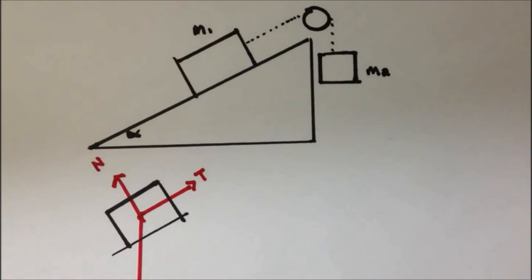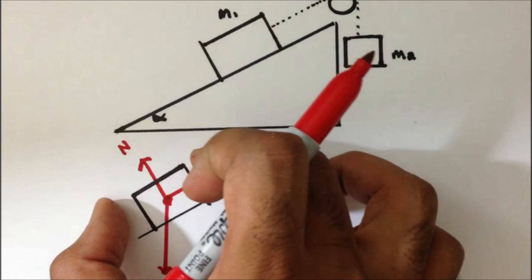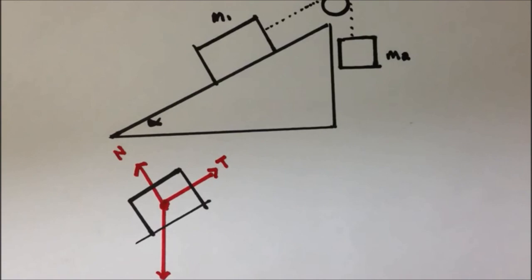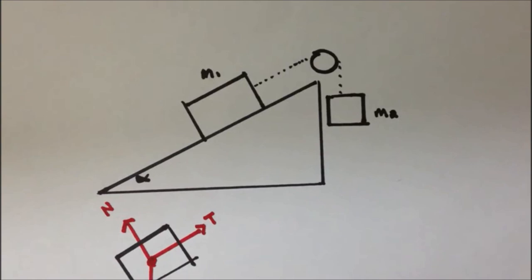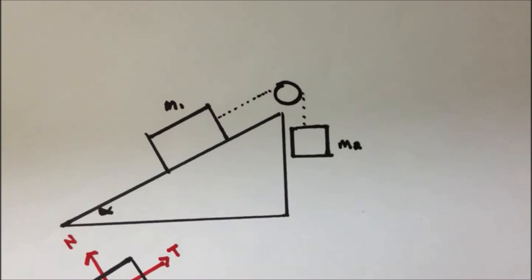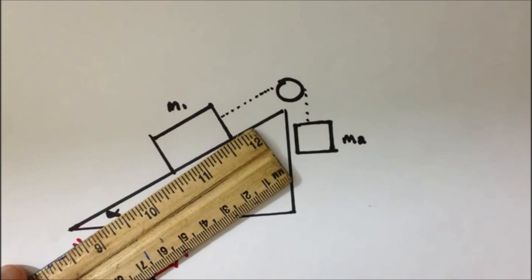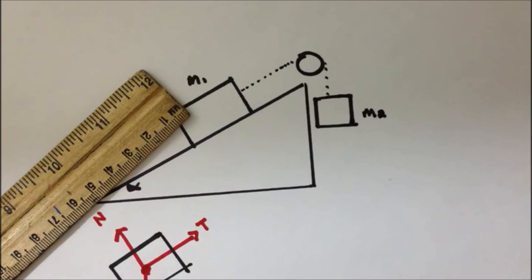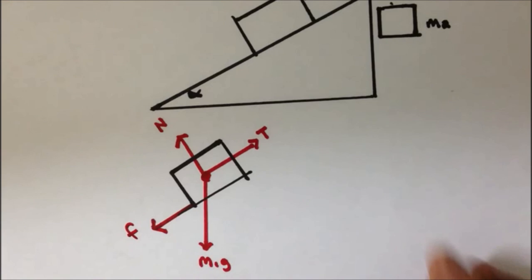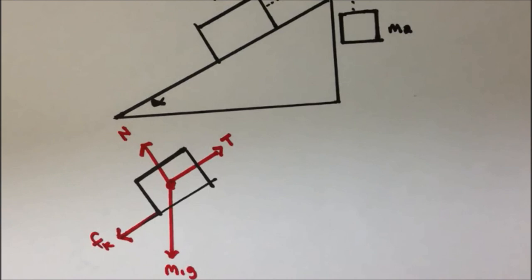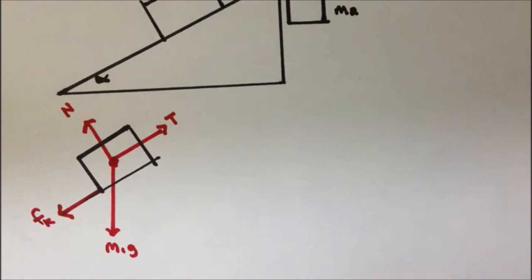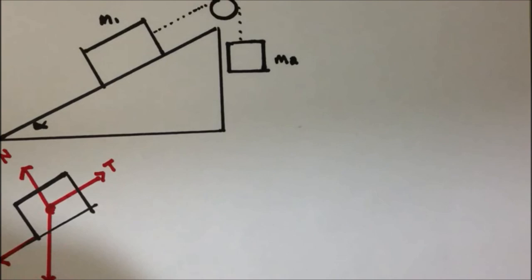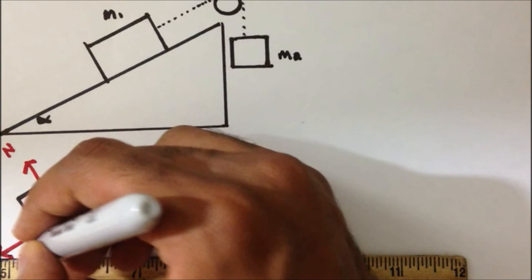We also have the contact force between M1 and the inclined plane, which is the friction force. We know the friction force will be directed down the inclined plane because the block will move up the inclined plane, or the net force is directed up the inclined plane. This is the kinetic friction force fk, because it's in motion. This is the free body diagram for mass M1. We should not forget alpha — the incline angle.